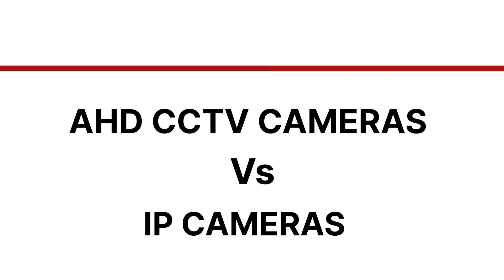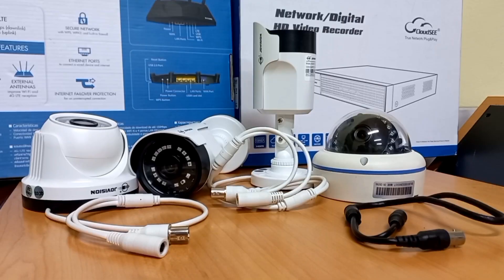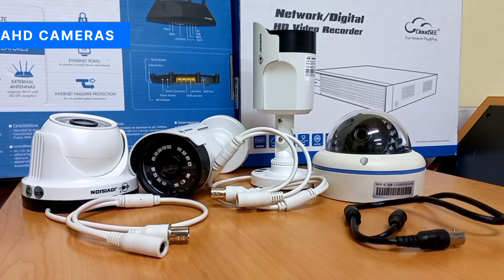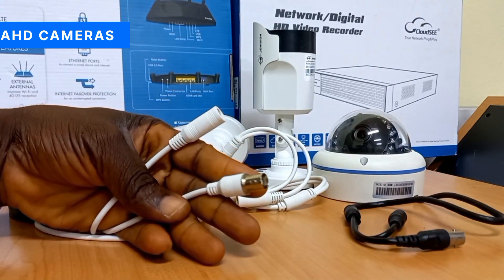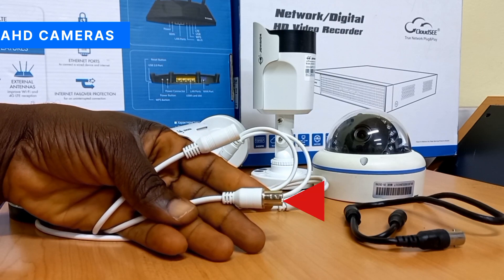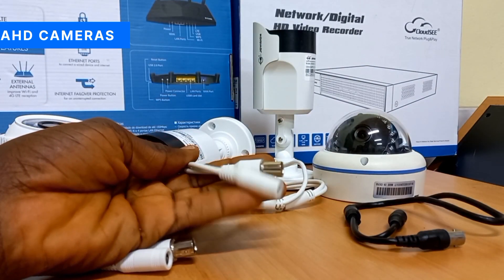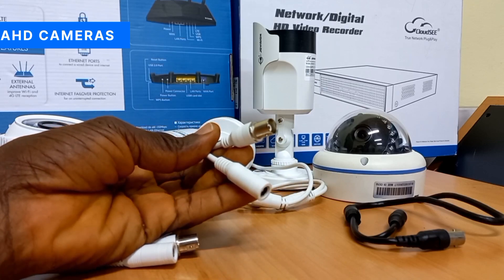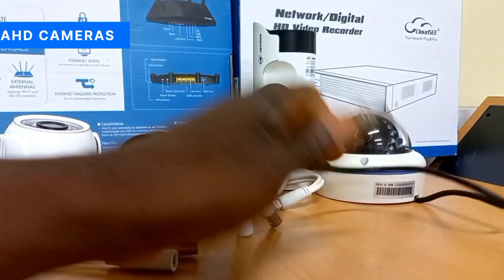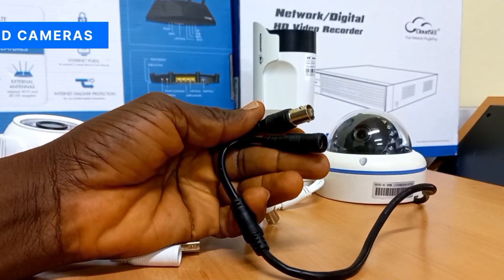Let's start by comparing the cameras, that is AHD versus IP cameras. All the cameras you see here are AHD cameras. The unique feature used in identifying that these cameras are analog or AHD cameras is the BNC connector on the terminal of each camera. You can see that all these cameras have the BNC connector aside the DC power connector, so we can conclude that all these cameras are analog or AHD cameras.